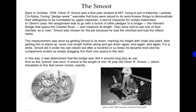Back in October 1958, Oliver R. Smoot was a first-year student at MIT trying to join the fraternity Lambda Chi Alpha during pledge week. Wannabe frat boys were asked to do semi-insane things to demonstrate their willingness to be humiliated by upperclassmen. In Oliver's case, the assignment was to go with other pledges to the Harvard Bridge spanning the Charles River and measure its length. They were told to use one of their members as a ruler.